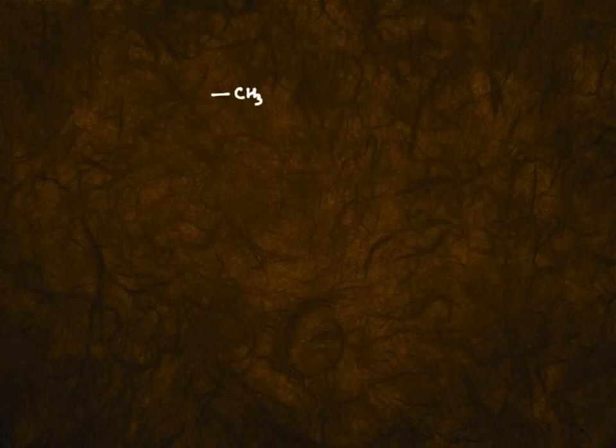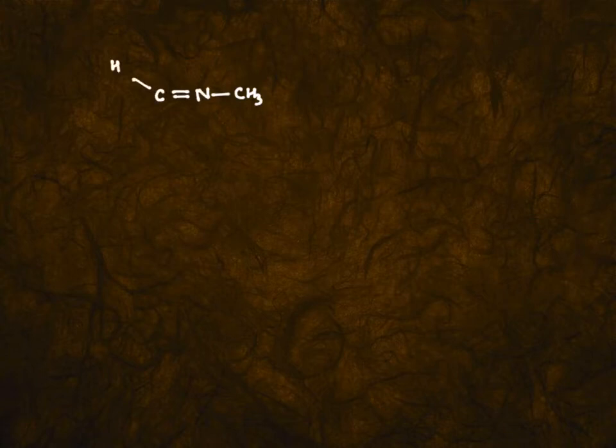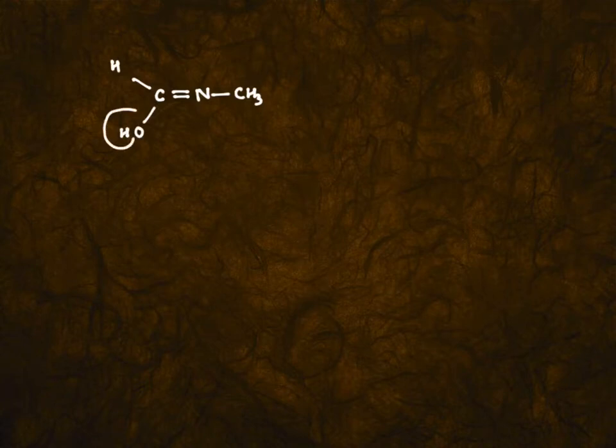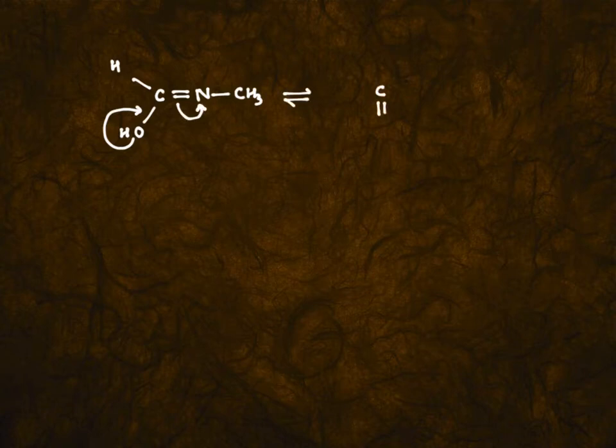So, CH3 we have, now where is CH3 attached? It is attached to nitrogen, to a carbon, and on this carbon, we had one H and one OH. This particular compound, undergoing tautomerism, can give us C double bond O at this place, and we can expect NHCH3 here.